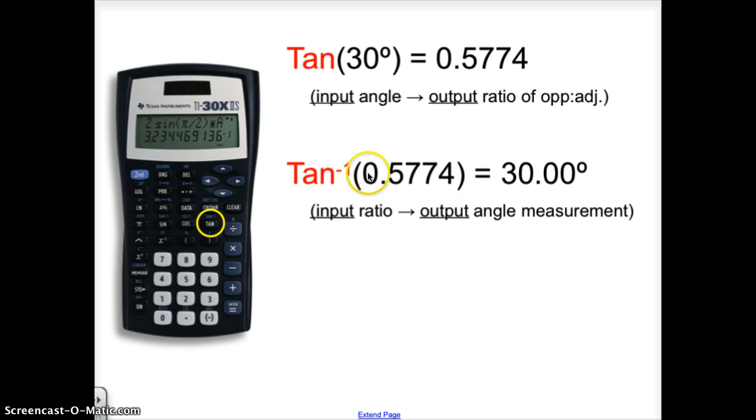If you wanted to find the angle that corresponds to the tangent of 0.5774, you would type in the inverse, which is the second button followed by the tangent button. So the inverse of the tangent will find you the angle, the regular tangent button will find you the decimal version. So depending on what you're looking for, you would then be able to use that function to solve.